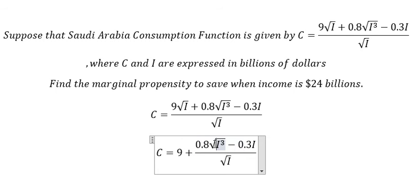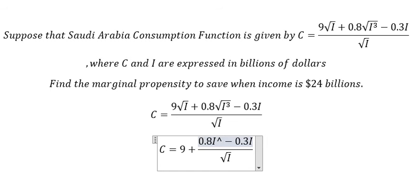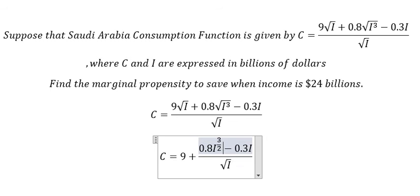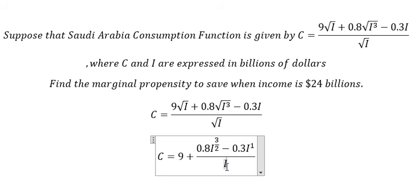This one we have I to the power of three with the square root, so that is I to the power of three over two. This one is number one. This one is I to the power of one over two.